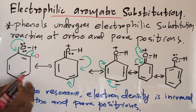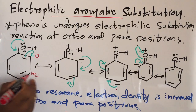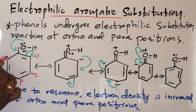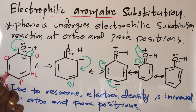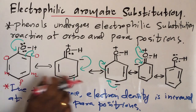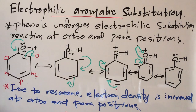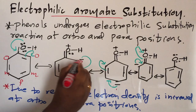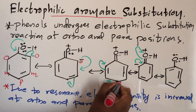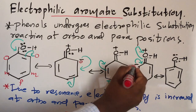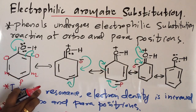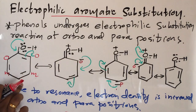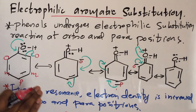This position is called ortho, this position is meta, and this one is para. Again, here ortho, meta, para. Looking at the structures, where the electron density is maximum? Ortho. Another position is para. So in phenol, ortho and para position electron density is maximum.